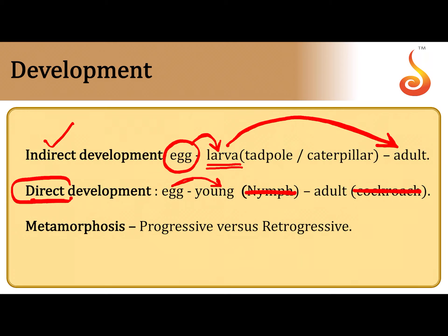Cockroach is not an apt example for direct development. Better examples include a lizard, crocodile, bird, or mammal. For instance, a bird hatches out of its egg and the young one is called a chick, which is very similar to the adult — so we cannot call it a larva. The young one gradually gains body mass and body proportions until it becomes sexually mature and then an adult.